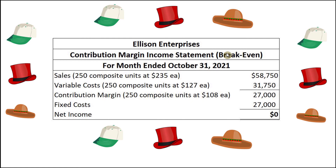Here we have a contribution margin income statement at the breakeven point. For sales, we have 250 composite units multiplied by the $235 selling price, giving us $58,750 of sales. Variable costs are 250 composite units multiplied by the $127 variable cost, which comes to $31,750. When we subtract those two numbers, we get the contribution margin of $27,000 — or equivalently, 250 composite units times $108. Then we subtract the fixed costs of $27,000, so $27,000 minus $27,000 gives us our breakeven income of $0.